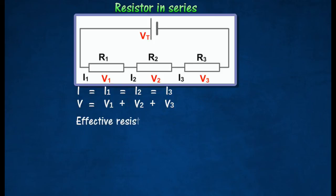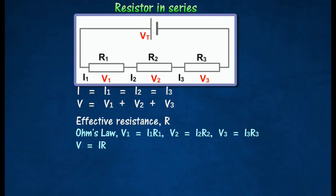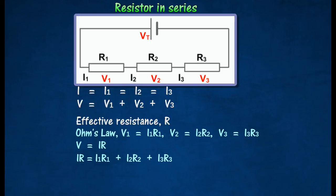From Ohm's law: V1 equals I1R1, V2 equals I2R2, and V3 equals I3R3. R is the effective resistance, and V equals IR. Hence, the effective resistance of two or more resistors connected in series is the sum of the individual resistances.